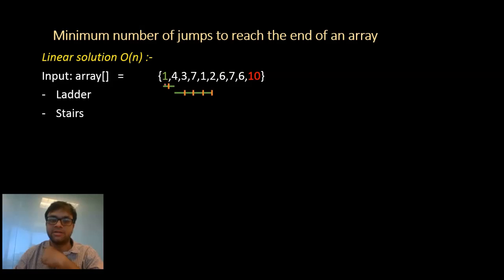So at index 0, the number of stairs we have is 1. At index 2, we have 4 stairs. And once we do that by going along the array.